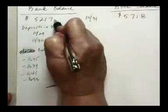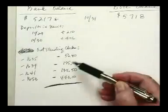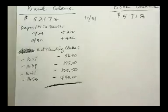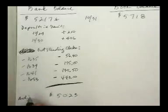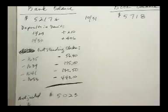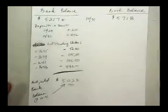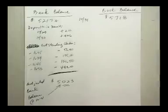I start with $5,217 — the October 31st balance the bank reflects — add $210 plus $406, and subtract $56.40, $175, $135.50, and $443.10. The adjusted bank balance at October 31st is $5,023. Any questions on what figures affect the bank? It's only three things: deposits in transit, outstanding checks, or bank errors — and there are no bank errors in this class.